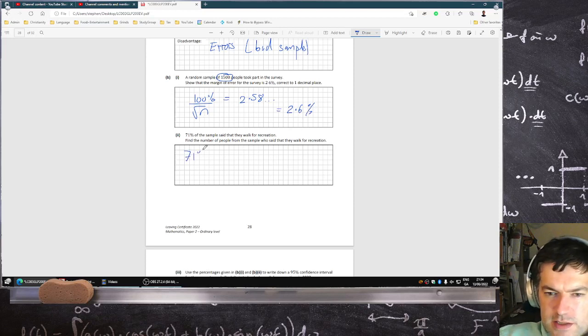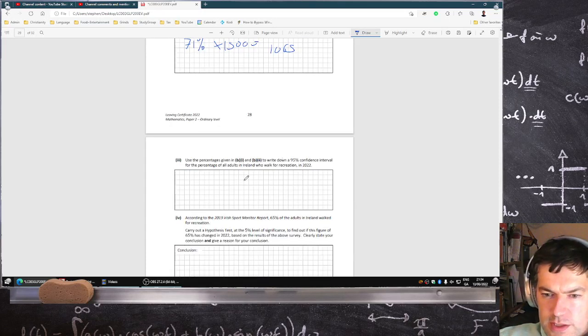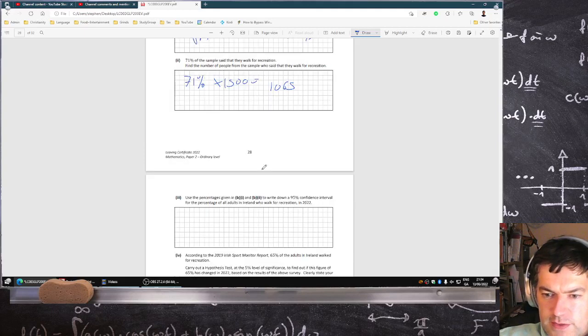71% said they walk, and this was 71% of 1500, so that's 1065. Use your percentages in b1 and b2 to write down a 95% confidence interval for the percentage of adults in Ireland who walk for recreation.